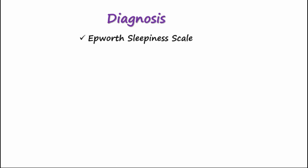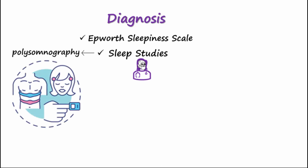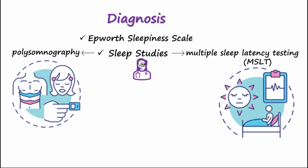If you suffer from excessive daytime sleepiness, the Epworth sleepiness scale is helpful to take as a first assessment. Diagnosis by a sleep medicine physician is based on symptoms and results from sleep studies, polysomnography, and multiple sleep latency testing. Hypocretin levels can also be measured in the CSF.